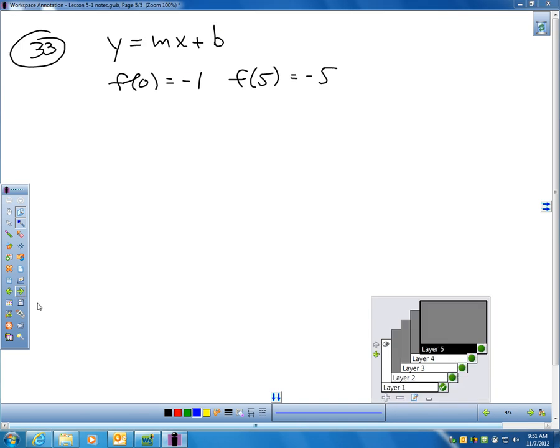And, then, one more to do. Look at number 33 on page 287, the directions. Write an equation for the linear function f with the given values. And, if you look at 33, they said f of 0 equals negative 1 and f of 5 equals negative 5.